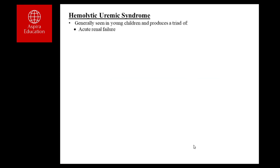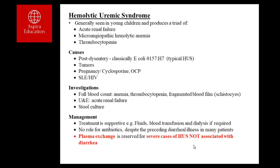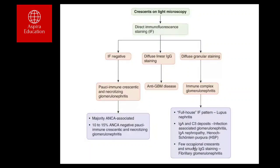Today we'll discuss a few important aspects of kidney disease. The most important one is crescentic glomerulonephritis. Any patient who presents with rapidly progressive renal failure — meaning creatinine is worsening on a weekly basis or rapidly in four or five days — and has proteinuria and microscopic hematuria, you should consider the possibility of crescentic glomerulonephritis. This is diagnosed based on pathology, but the clinical presentation is that of rapidly progressive renal failure.